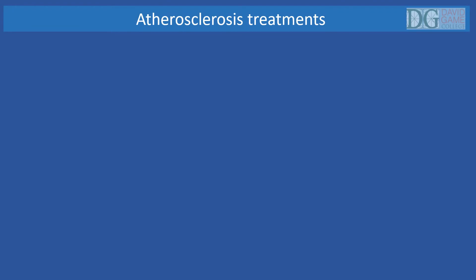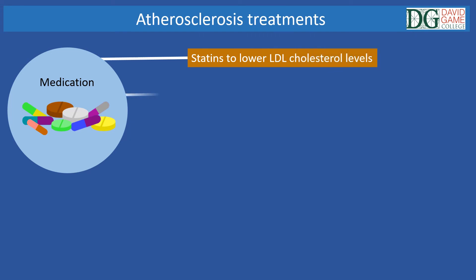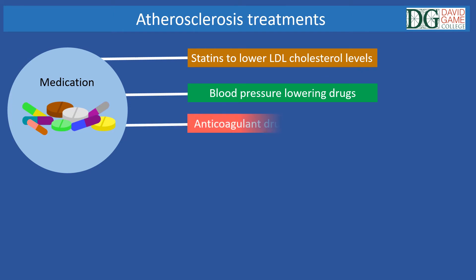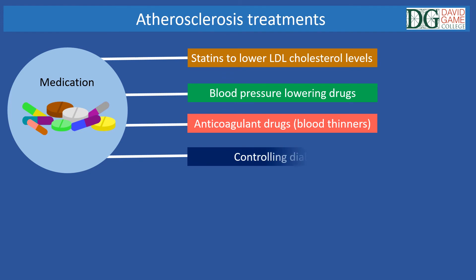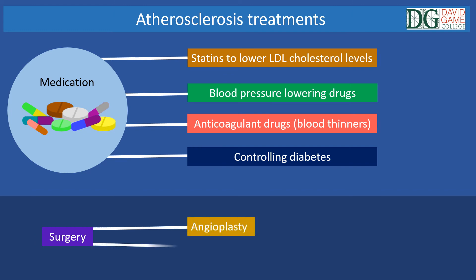Atherosclerosis treatments generally include statins to lower the level of LDL cholesterol — that is the bad cholesterol — blood pressure lowering drugs, anticoagulant drugs such as aspirin that are blood thinners, and also controlling diabetes. In some cases, surgeries such as angioplasty and coronary artery bypass may be needed.